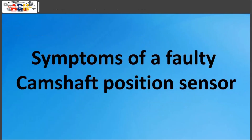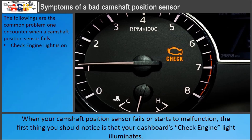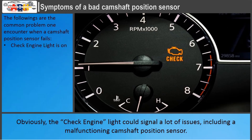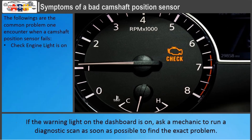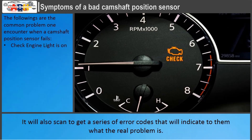The following are the common problems encountered when a camshaft position sensor fails. When your camshaft position sensor fails or starts to malfunction, the first thing you should notice is that your dashboard's check engine light illuminates. The check engine light could signal a lot of issues, including a malfunctioning camshaft position sensor. If the warning light is on, ask a mechanic to run a diagnostic scan as soon as possible. All vehicles have an OBD system that efficiently monitors the vehicle's hardware and software and can detect deterioration in a part before it fails completely, leading to imperceptible performance changes. A scan will produce a series of error codes indicating the real problem.